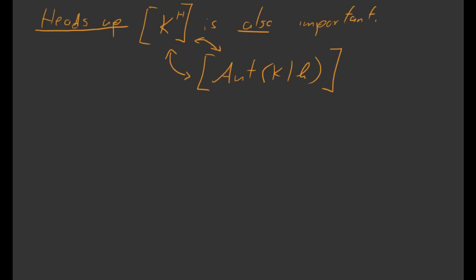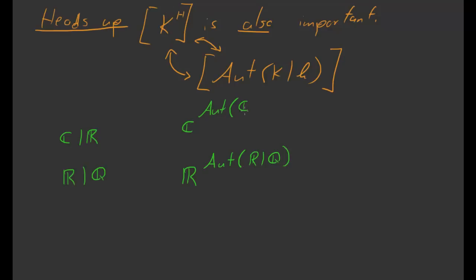If you'd like something to think about until then, I'd encourage you to think about what fixed fields look like for the two field extensions we've looked at so far: C over R, and R over Q. Specifically, think about what R^(Aut(R/Q)) and C^(Aut(C/R)) look like, because this will become important later on when we build an example. It's always nicer to see things on your own before they're presented.